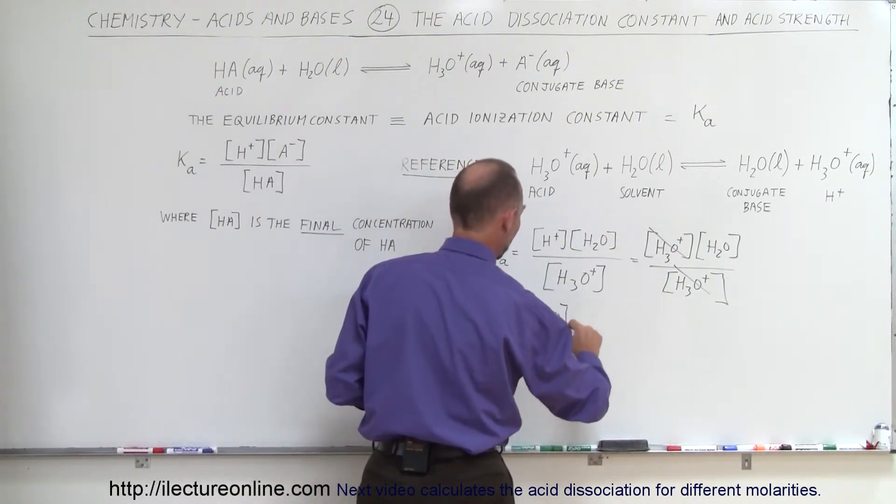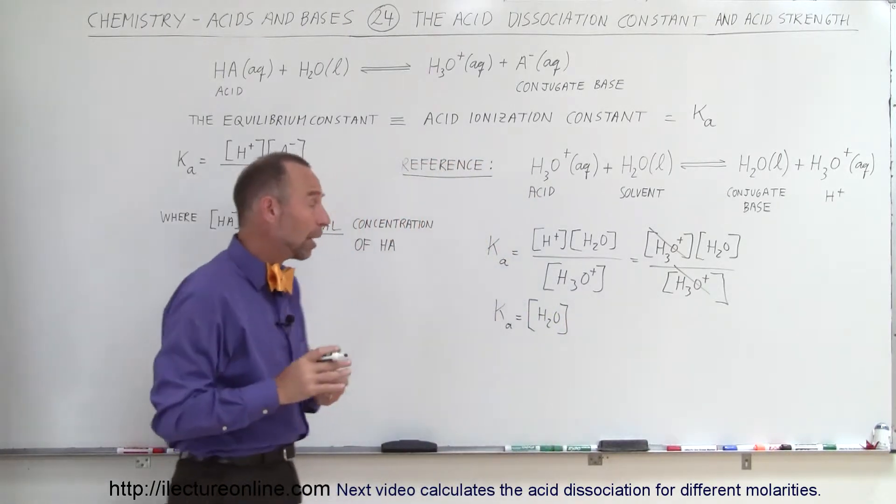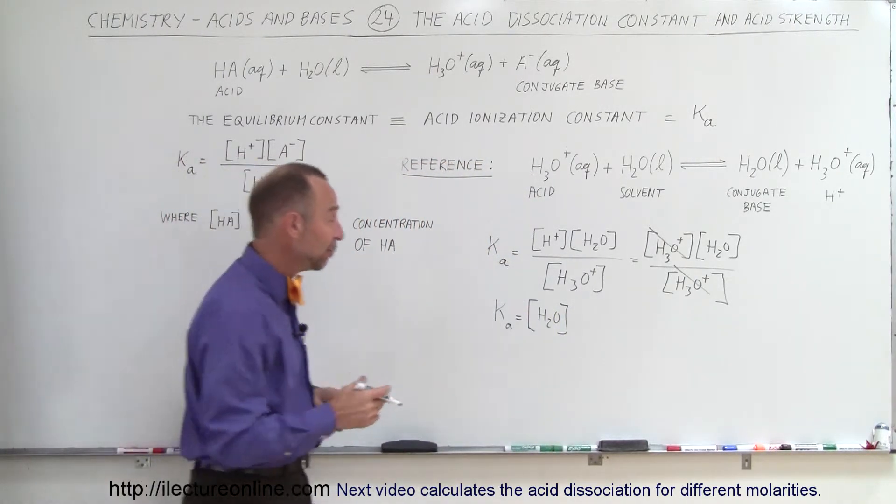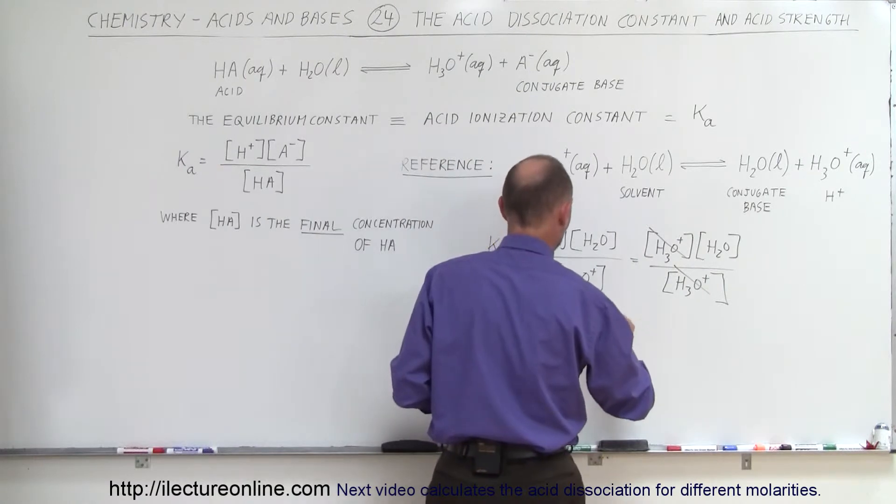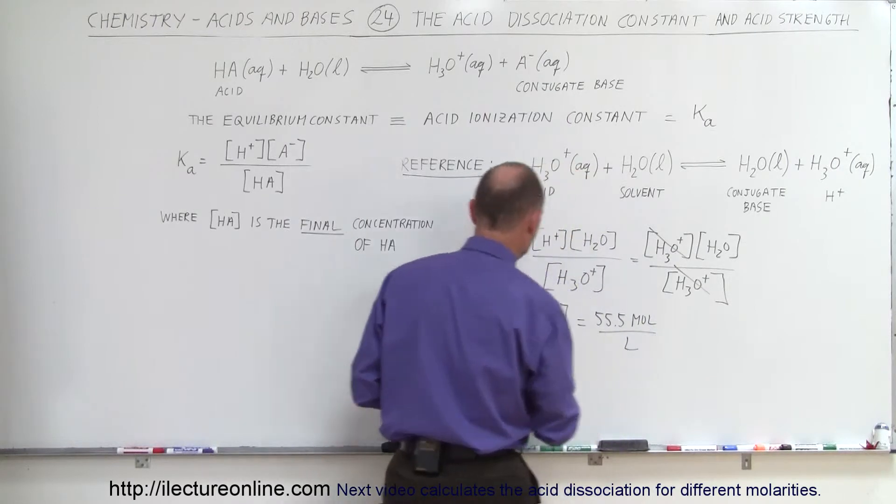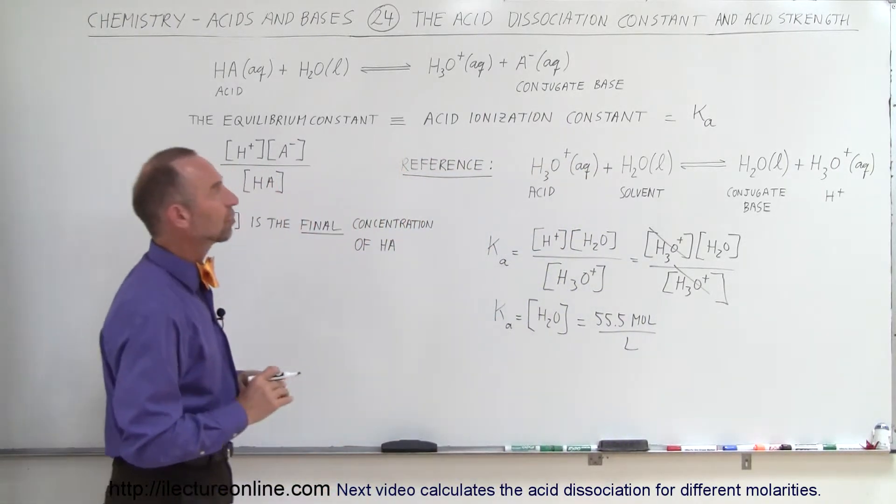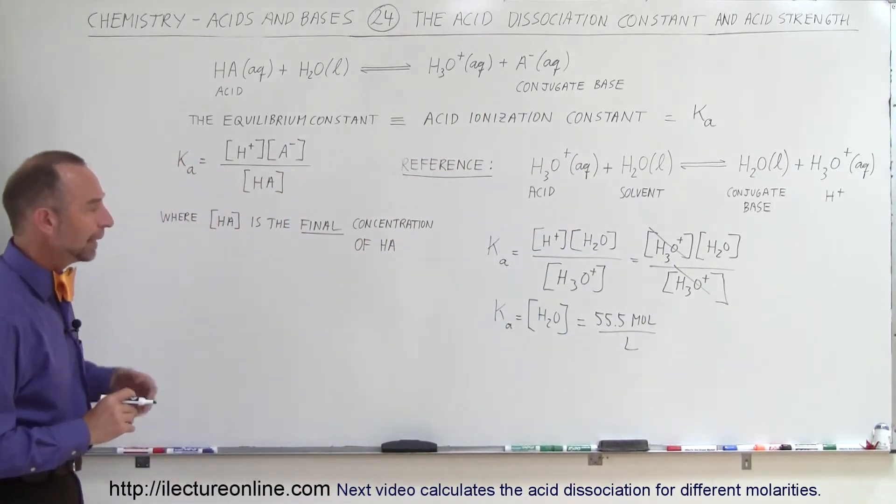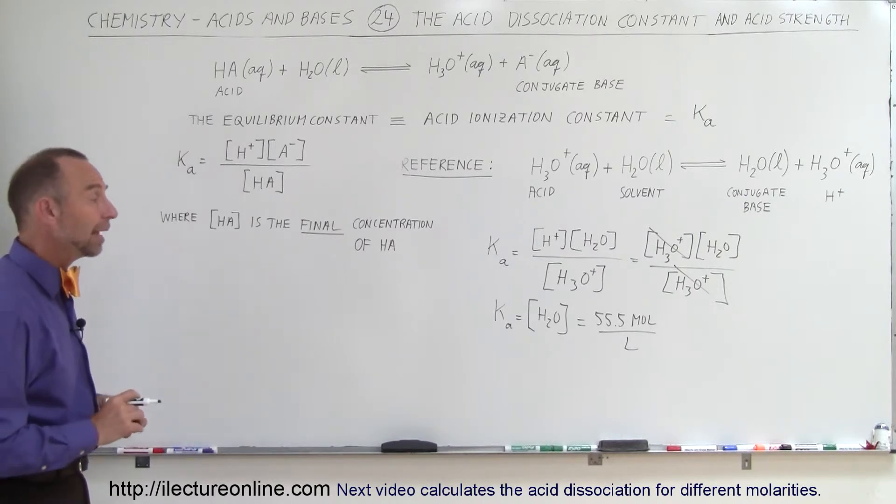And if you remember, that in a liter of water you have 55.5 moles of water, so this is equal to 55.5 moles per liter, and that's the dissociation constant for water, if you consider water as being an acid.